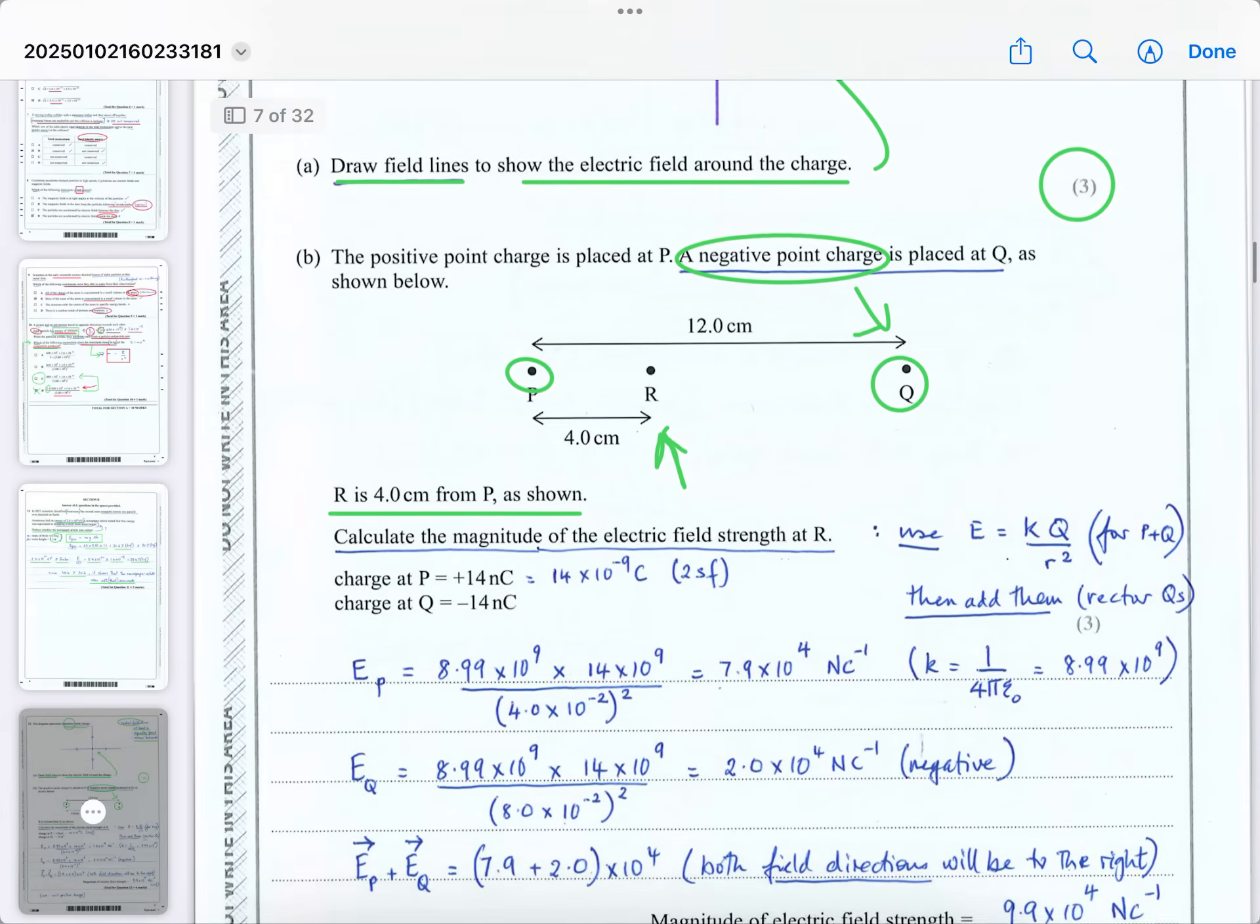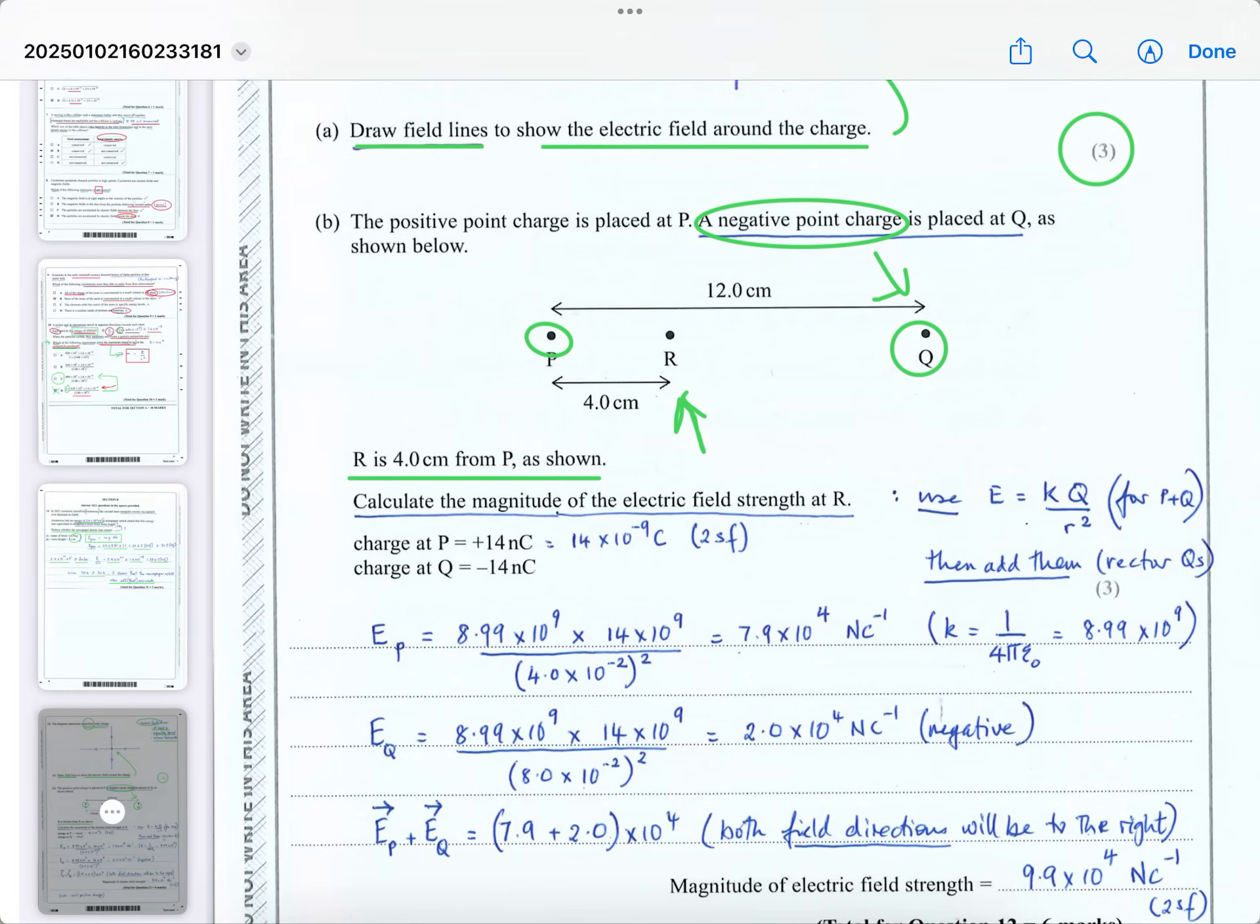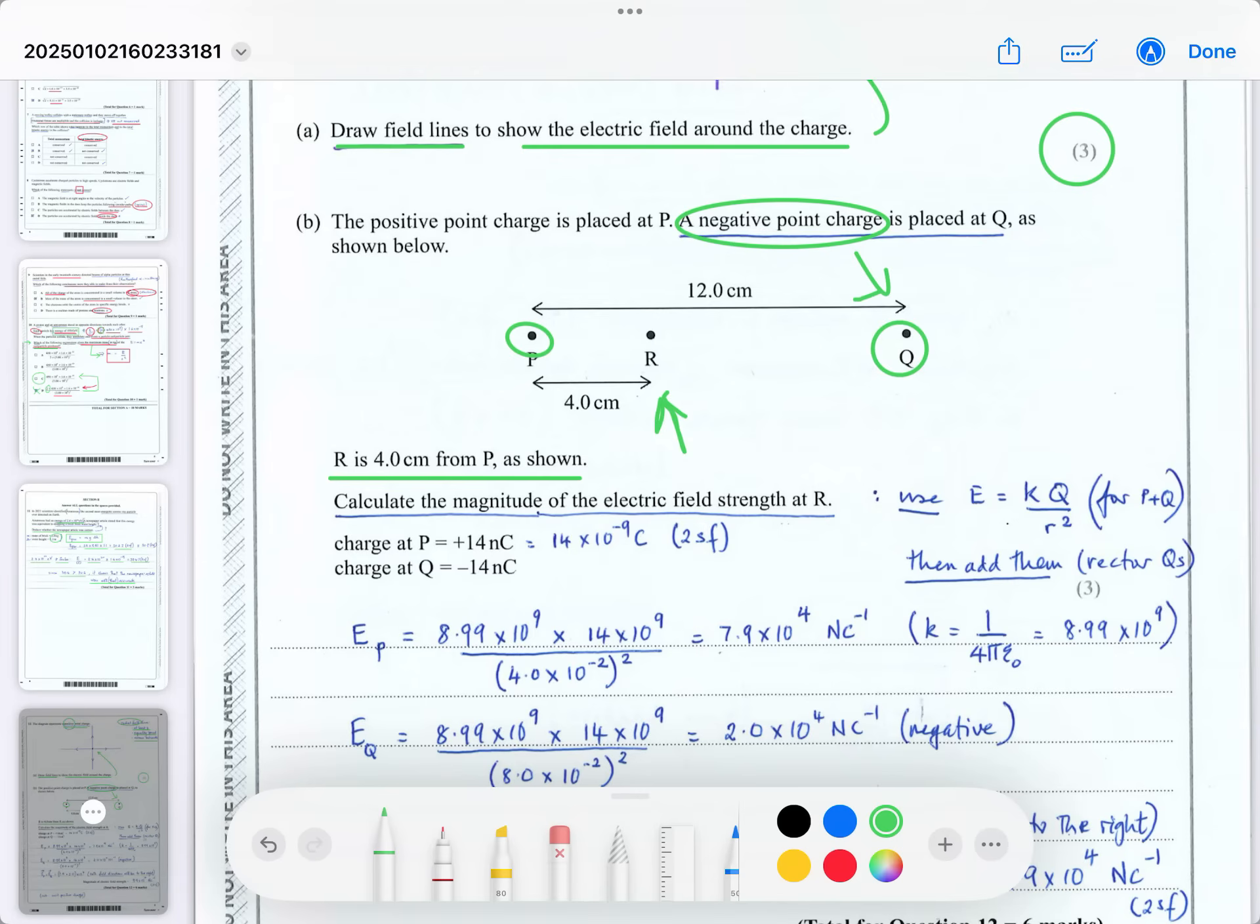What do they want you to do? They want you to calculate the magnitude of the electric field strength if you were at R. At R, calculate the magnitude of the field strength, the electric field strength at R. So to work out the field strength, you've got to use the equation for field strength, which is E equals KQ over R squared, where K is the constant of proportionality which is given to you in a data sheet. And it's equivalent to one over four pi epsilon naught. And then you have to add them. So you do it for P and you do it for Q.